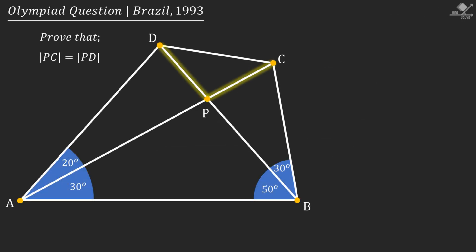In this Olympiad question, for the given angles, we are asked to prove that line segment PC is equal to line segment PD.